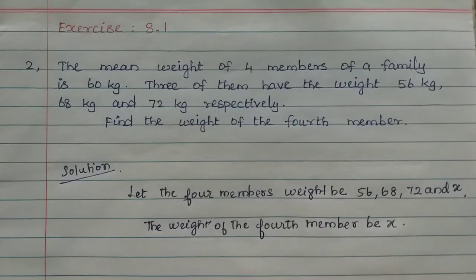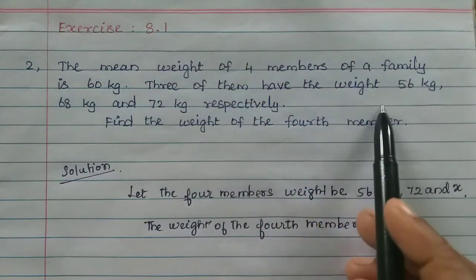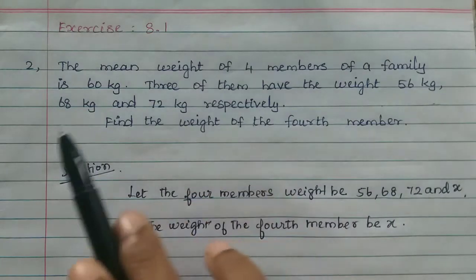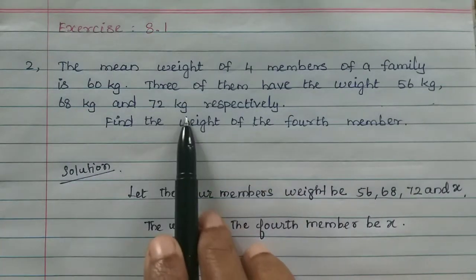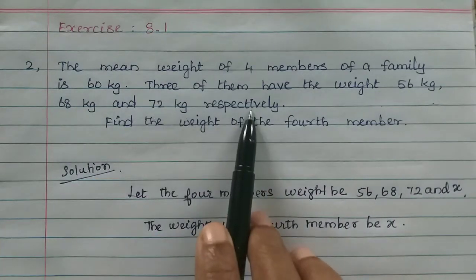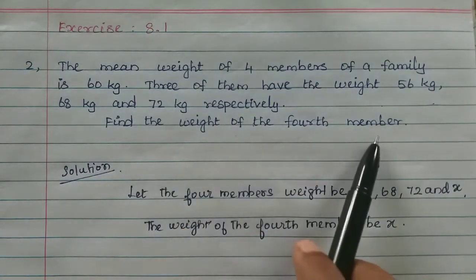The mean weight of 4 members of a family is 60 kg. Three of them have the weights 56 kg, 68 kg, and 72 kg respectively. Find the weight of the 4th member.